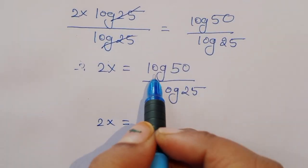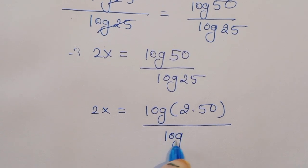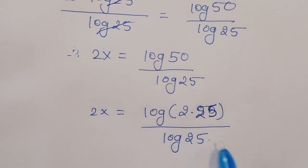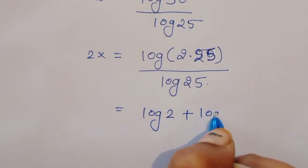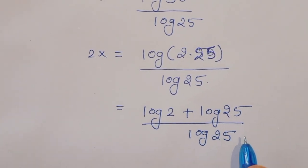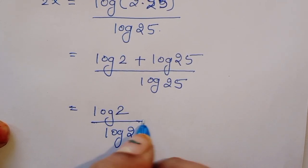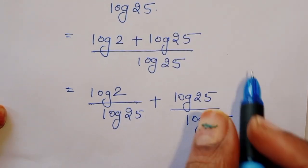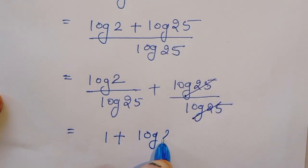Now we can write 2x is equal to log of 50 divided by log of 25. We can write 50 as 2 times 25, so this becomes log of 2 times 25 divided by log of 25. Using log properties this is log of 2 plus log of 25, all divided by log of 25. This equals 1 plus log of 2 divided by log of 25.